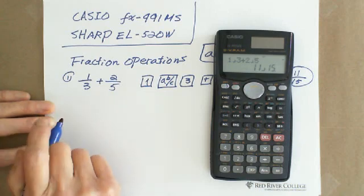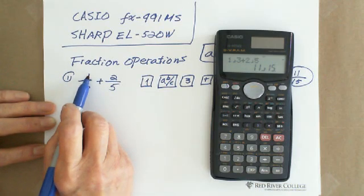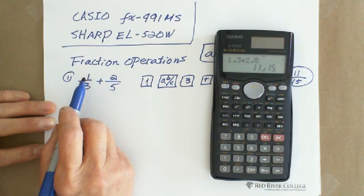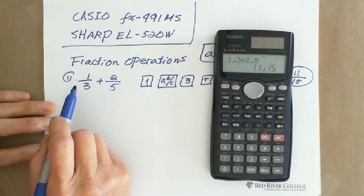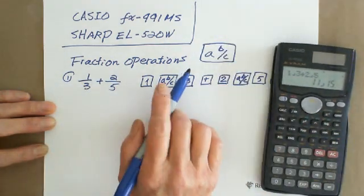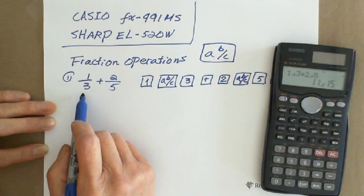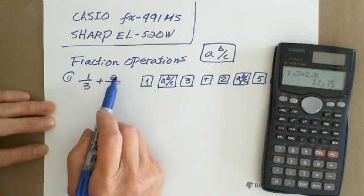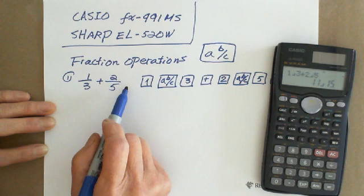That means every time you enter a number and express it as a fraction, you follow it with ABC. So 1 ABC 3 plus 2 ABC 5 equals 11 over 15.